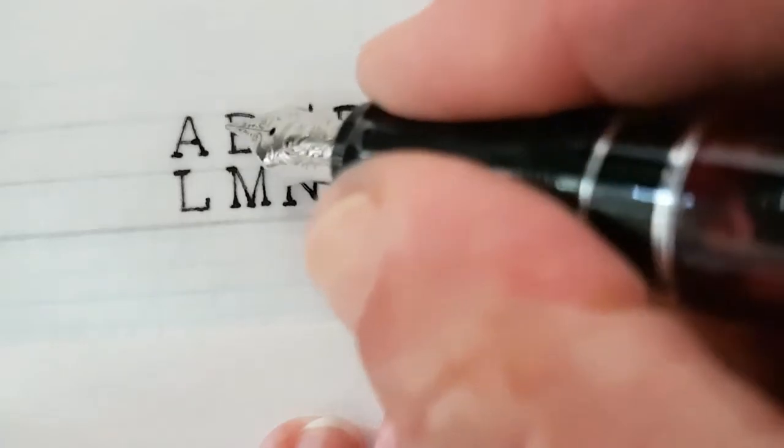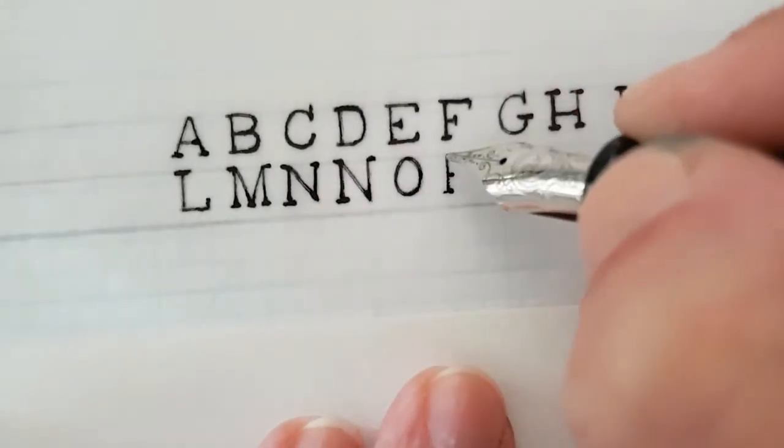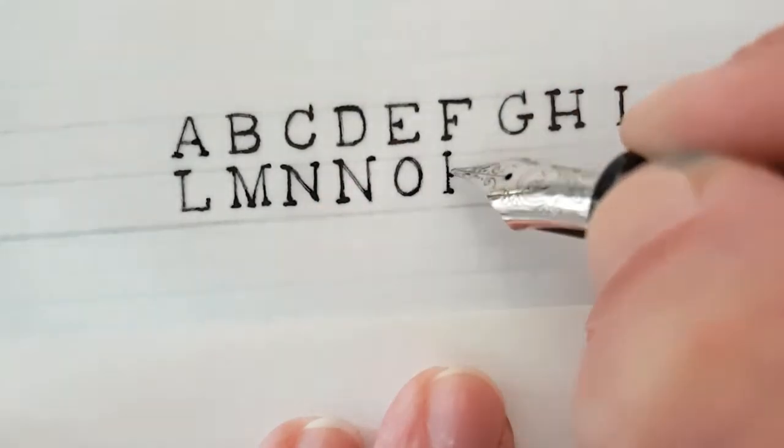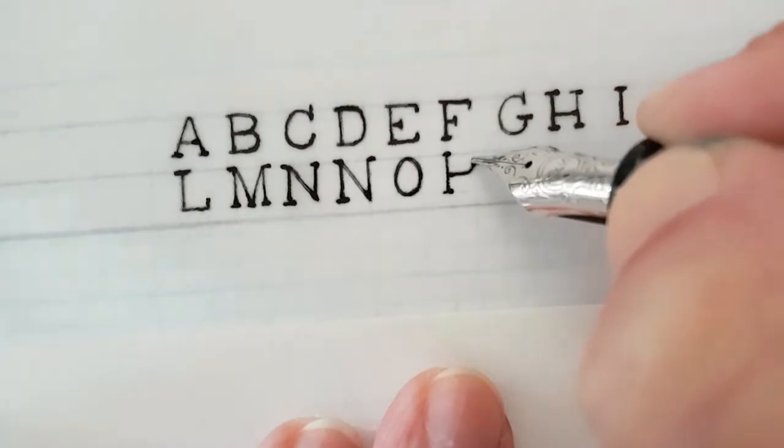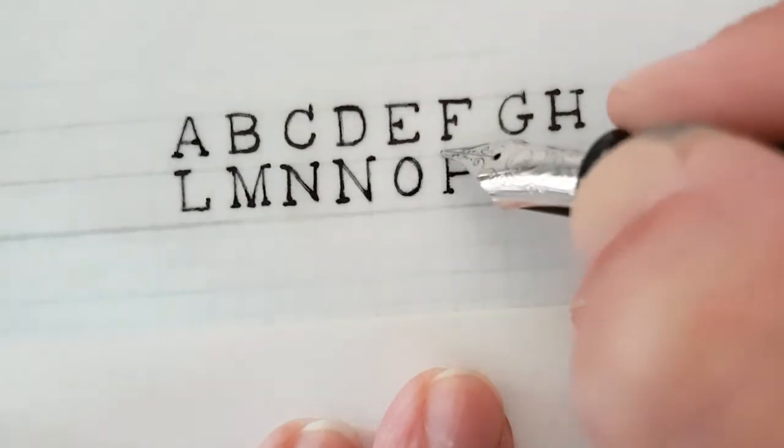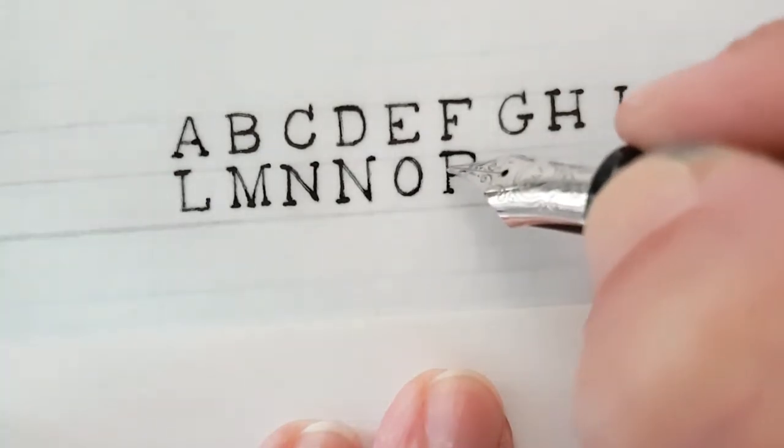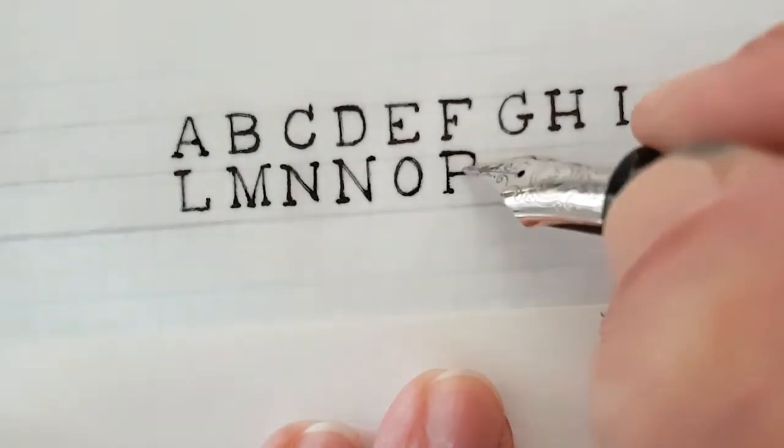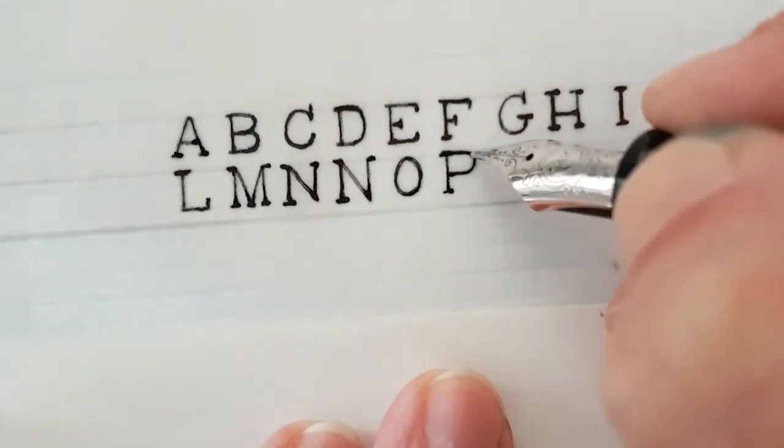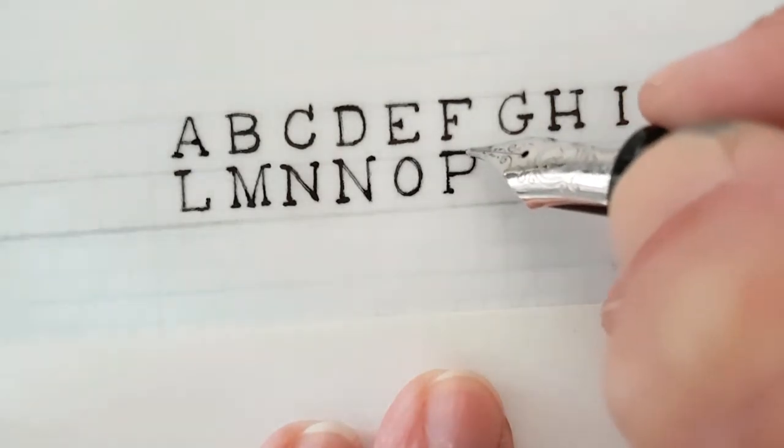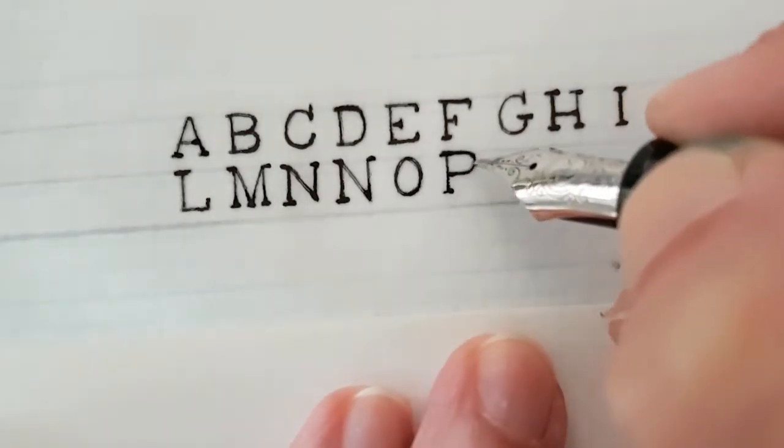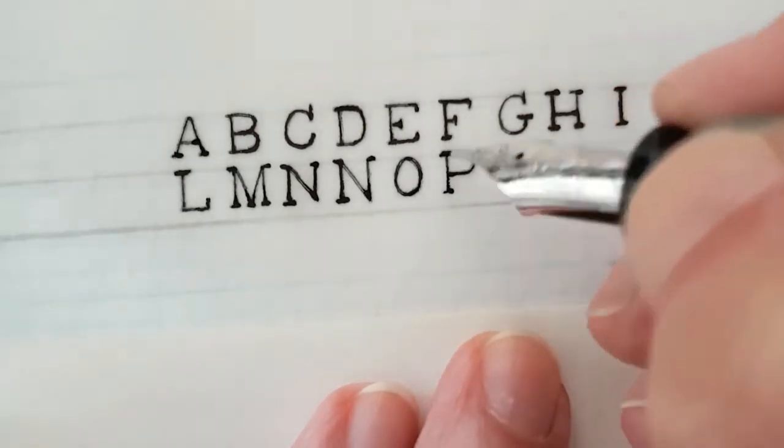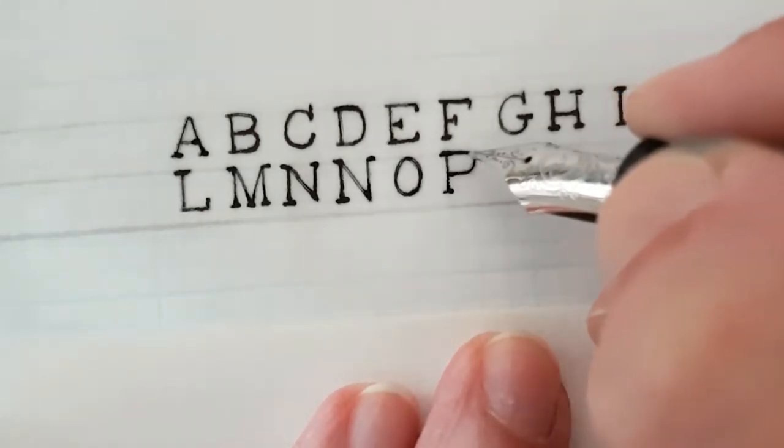For the P, as with the D, I make a little support mark where I want the ball of the P to end up. This bend here should be just as angled as this bend here. So you get this nice regular ball shape P.